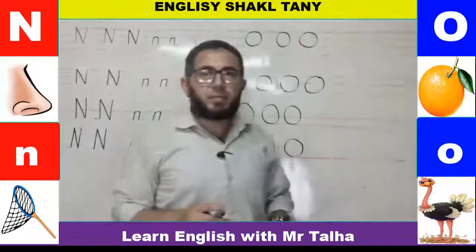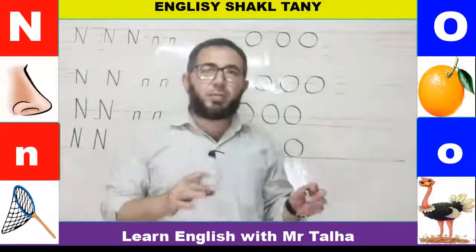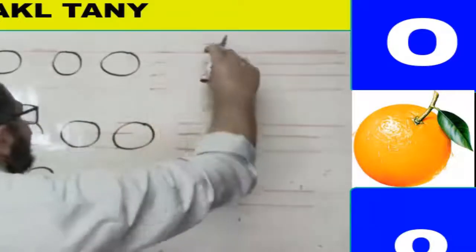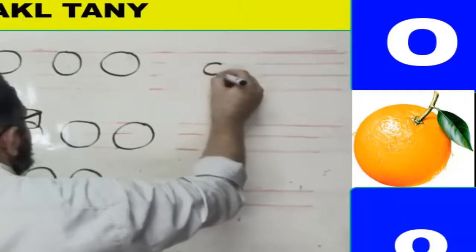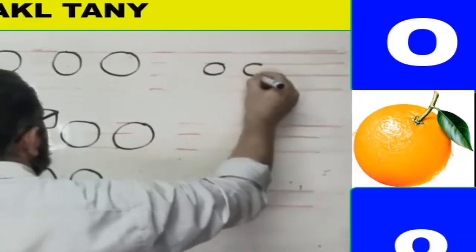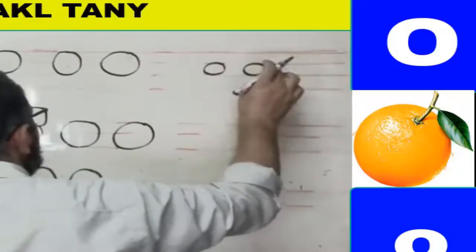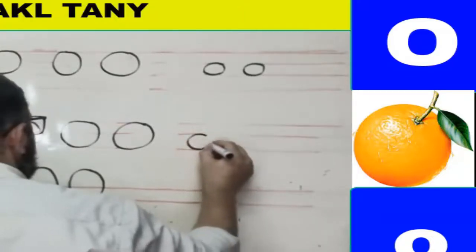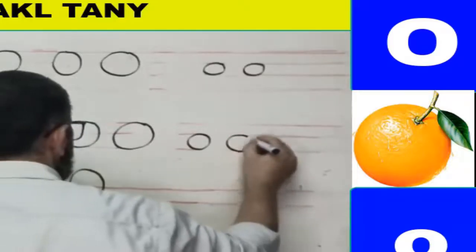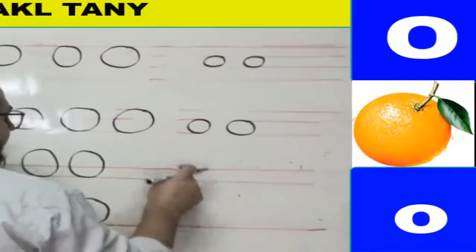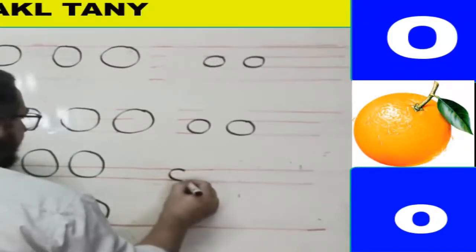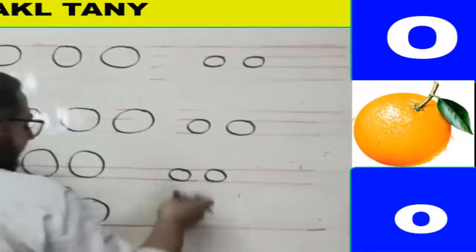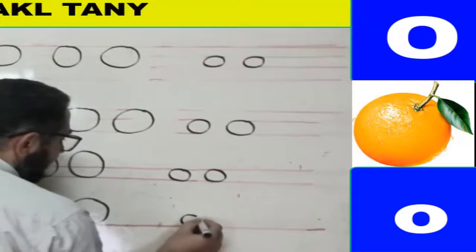The lowercase o is like capital O but smaller — it sits between two lines and must touch both lines. On four lines it sits between the middle two lines, forming a small circle. On two lines it touches both lines, and on one line it sits on the line. It's like a small circle — that's lowercase o.